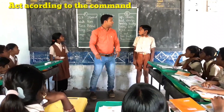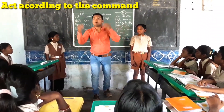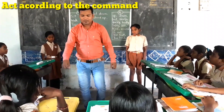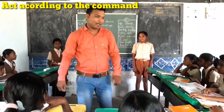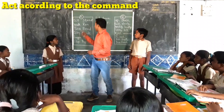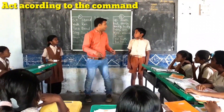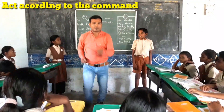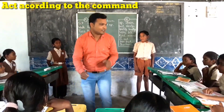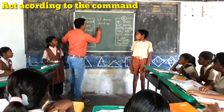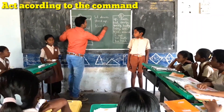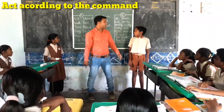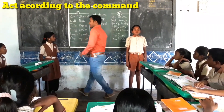Jayshree picks: Walk. Then: Slowly. What will be the command? Walk slowly! Good. Next, she picks: Run. Then: Fast. What will be the command? Run fast! This will be the command. Next, Jayshree picks: Turn. Then: Around. What will be the command? Turn around! In this way, this will be the command.